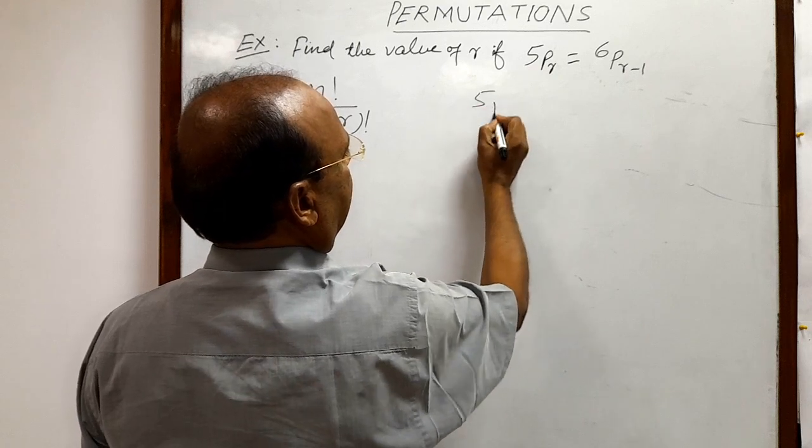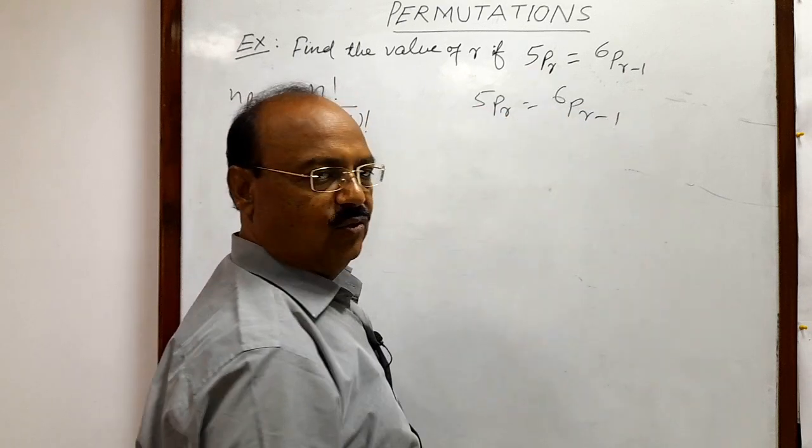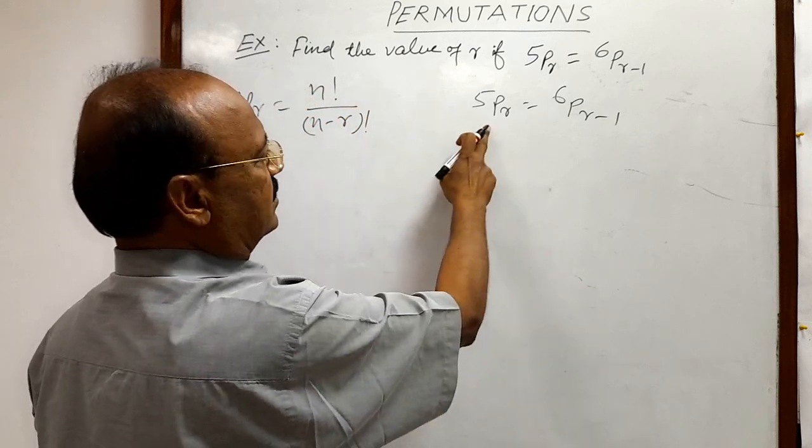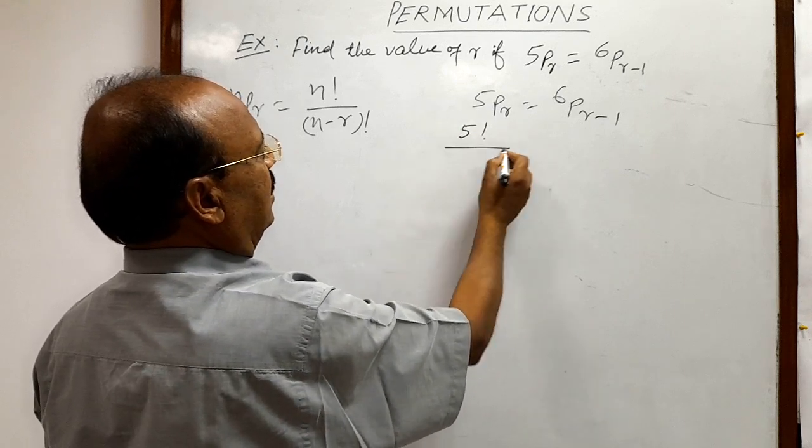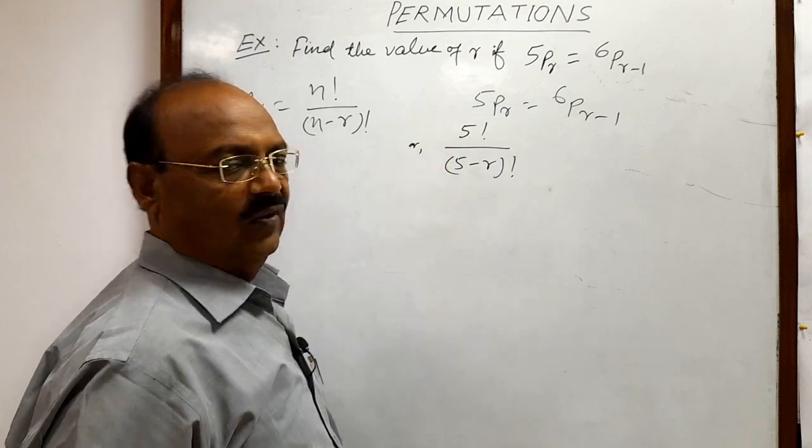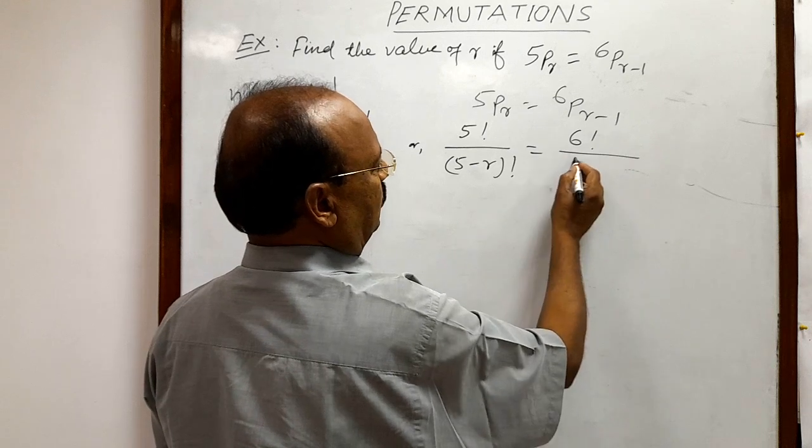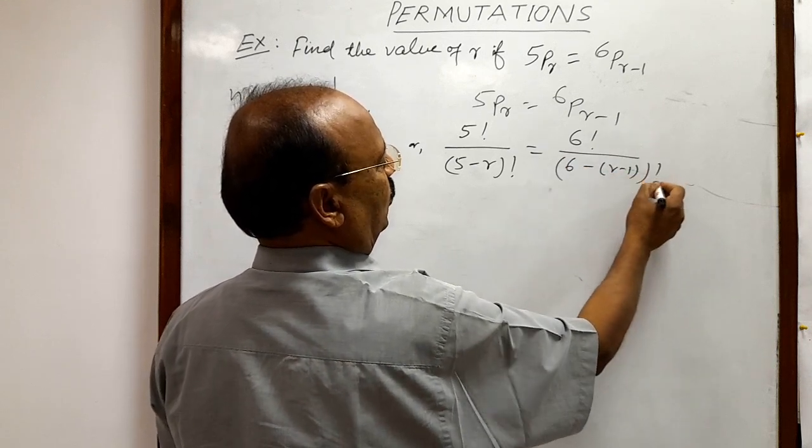Here we have 5Pr is equal to 6P(r-1). By using this formula, the left hand side 5Pr can be written as 5 factorial by (5 minus r) factorial. Similarly, the right hand side is 6 factorial by (6 minus r minus 1) factorial.